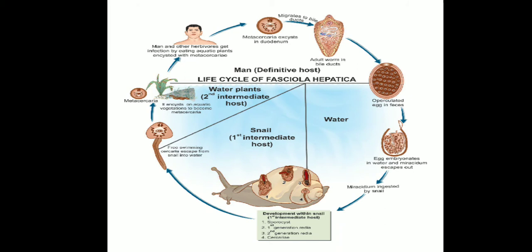Encystation occurs on aquatic plants, which act as the second intermediate host. The definitive hosts — sheep and man — get infection by ingestion of the metacercaria encysted on aquatic vegetation. After ingestion, the adult worm lives in the biliary passages; eggs are laid there and shed in feces. The embryo matures in water in about 10 days and the miracidium escapes.